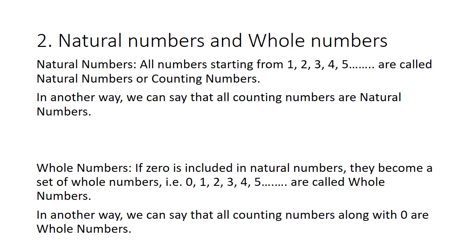Whole numbers: if 0 is included in natural numbers, they become a set of whole numbers. For example, 0, 1, 2, 3, 4, 5, etc. are called whole numbers. In another way, we can say that all counting numbers along with 0 are whole numbers. Have you understood? What are natural numbers and whole numbers? All counting numbers are called natural numbers and all counting numbers along with 0 are called whole numbers.